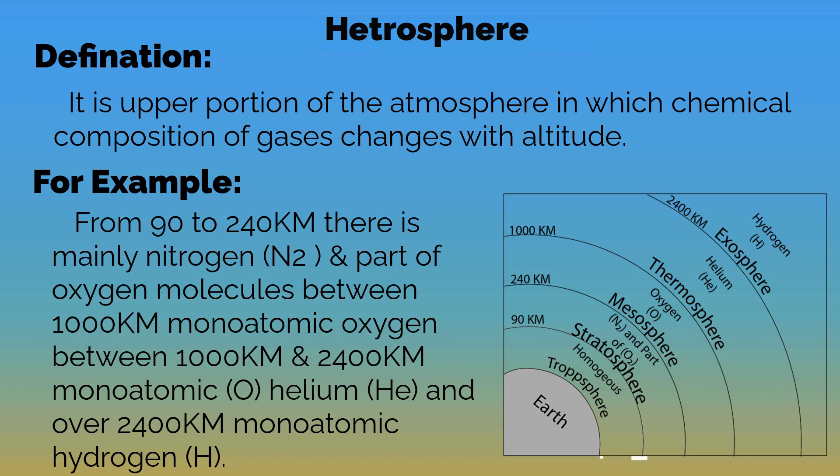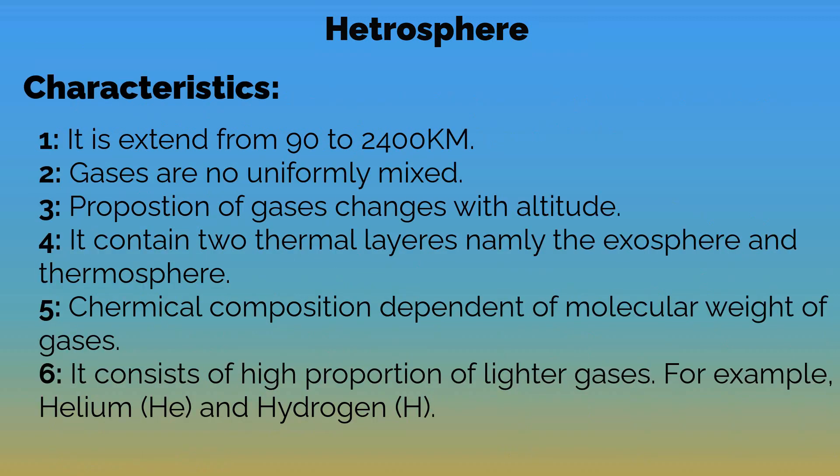So from 90 to 240 km, nitrogen and oxygen molecules are found; between 240 and 1000 km, monoatomic oxygen; from 1000 to 2400 km, monoatomic helium; and above 2400 km, monoatomic hydrogen. The heterosphere extends from 90 to 240 km. Gases are not uniformly mixed and the proportion of gases changes with altitude. It consists of two thermal layers: the exosphere and thermosphere.